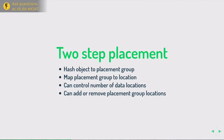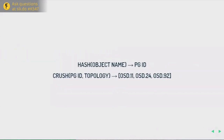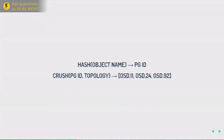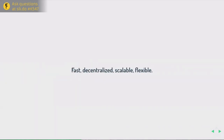The CRUSH algorithm takes a placement group ID and the cluster topology and outputs a list of names of locations where data is or should be. You hash the object into a placement group ID, run CRUSH with the cluster topology, and get back the storage locations.